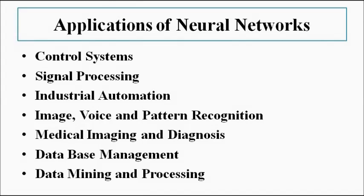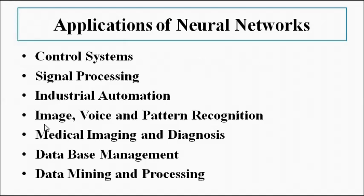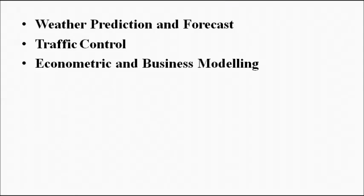Neural networks are used in a lot of fields and have a huge scope. In almost all fields now heavily dependent on computerized control and artificial intelligence, neural networks are in great demand. They are used in control systems, industrial instrumentation, automation and control, signal processing, image, voice and pattern recognition, the medical field, biomedical instrumentation for diagnosis and medical imaging, database management, data mining and processing, weather prediction, traffic control, business modeling, and econometric predictions — just to name a few applications.